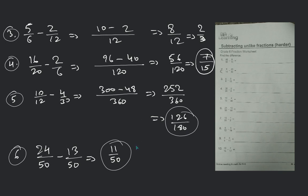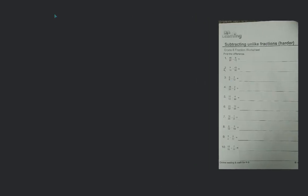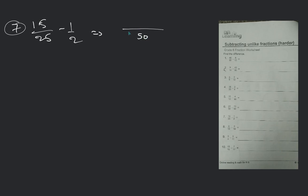Number 7: 15 by 25 minus 1 by 2. We took the LCM — it will be 50. That will be 30 minus 25 = 5. You will get 5 by 50, and it will be 1 by 10. 1 by 10 is the correct answer.